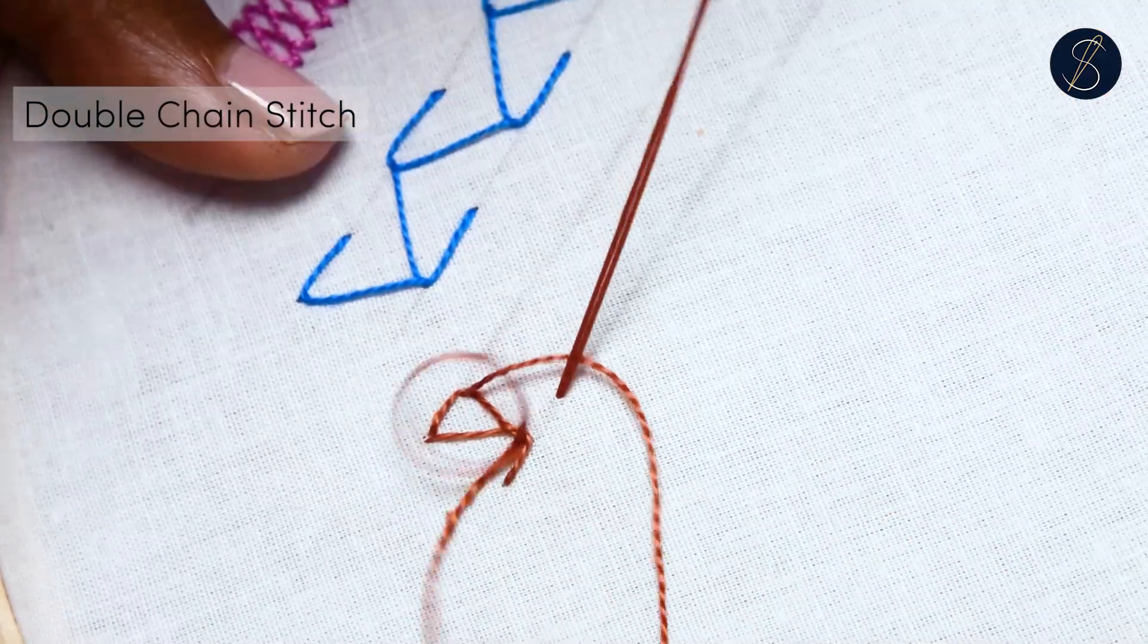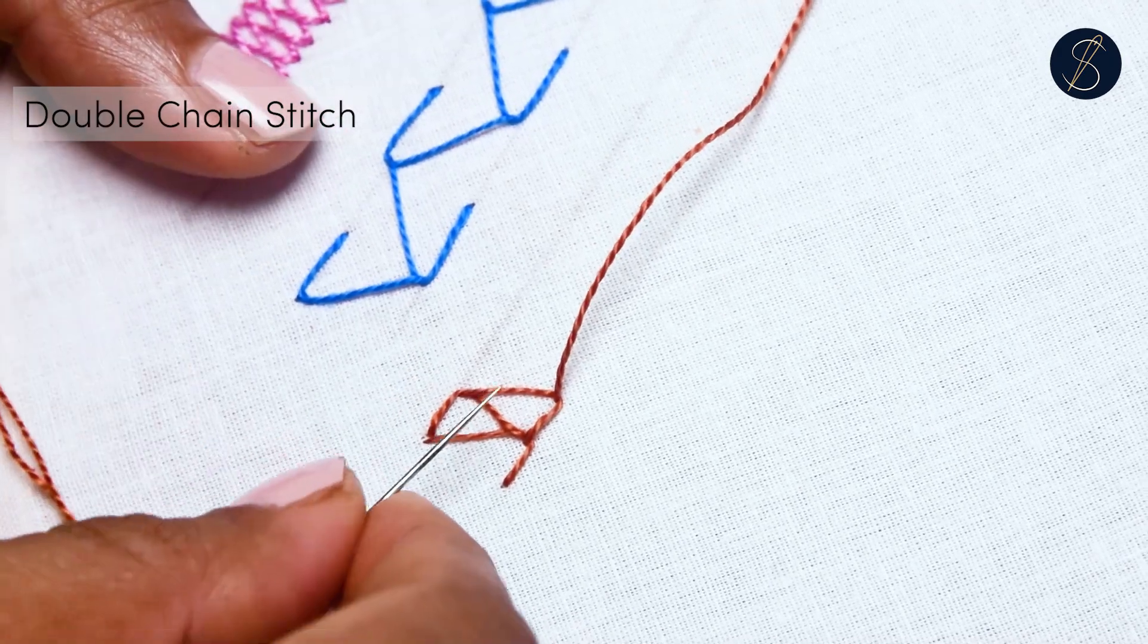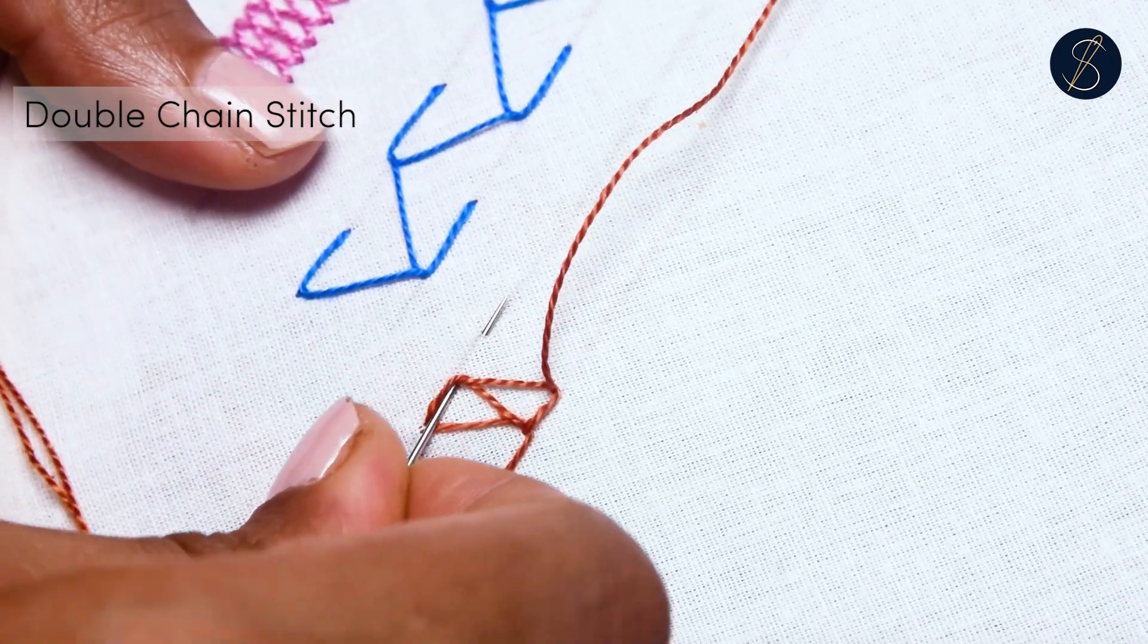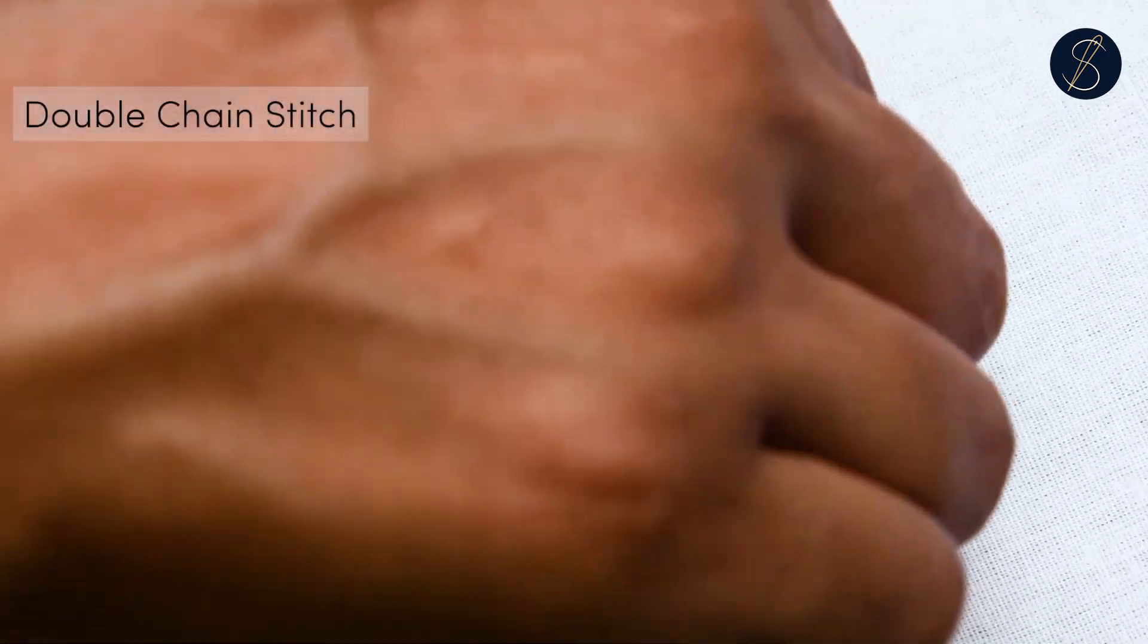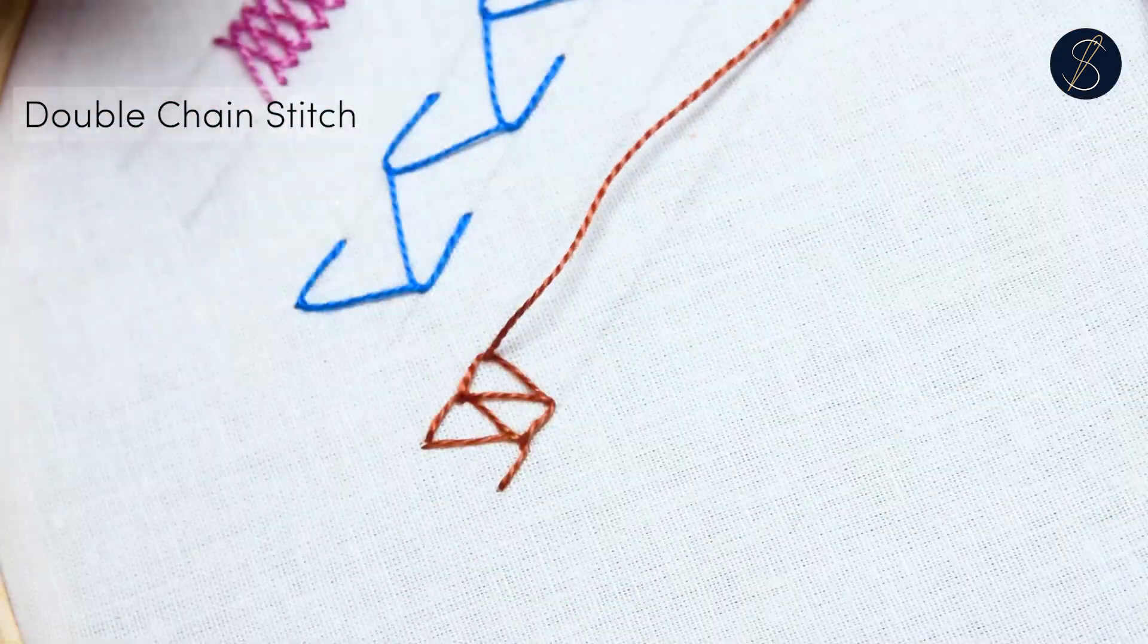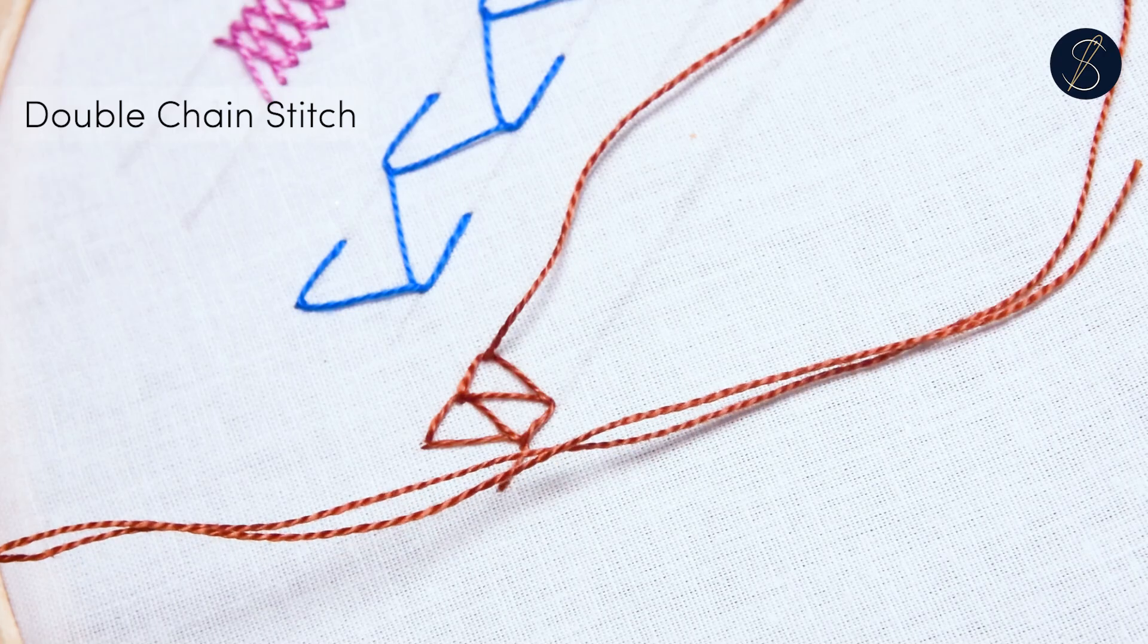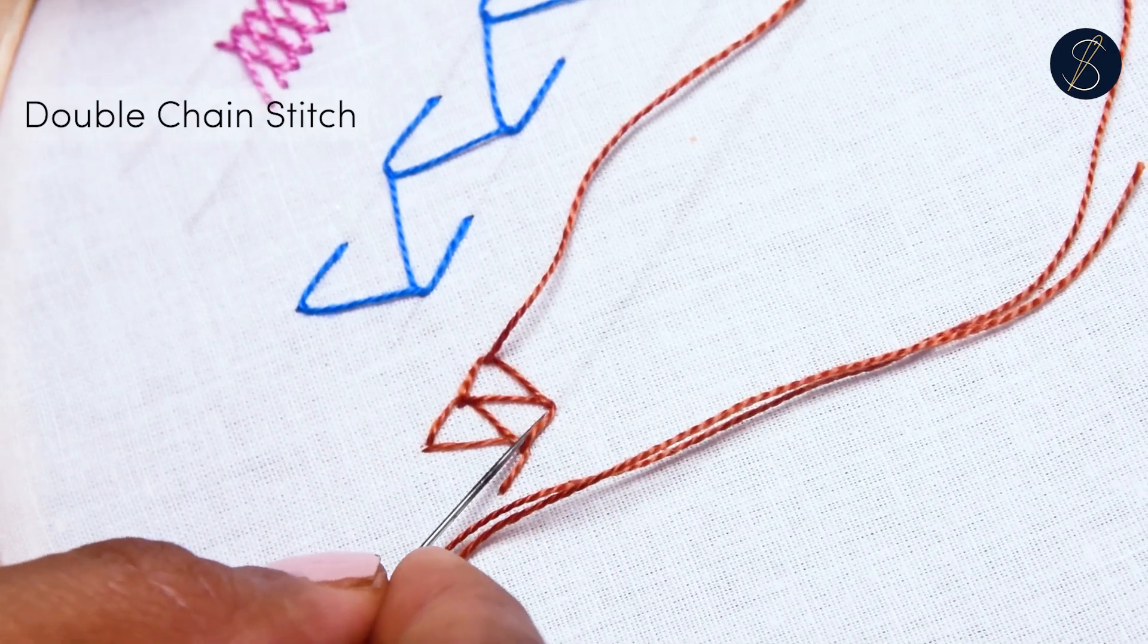This is a great stitch for borders and to make decorative lines. In this video tutorial, I have spaced both the lines enough for you to see the pattern being created. Try to work between parallel lines placed closer to each other for a tighter effect.